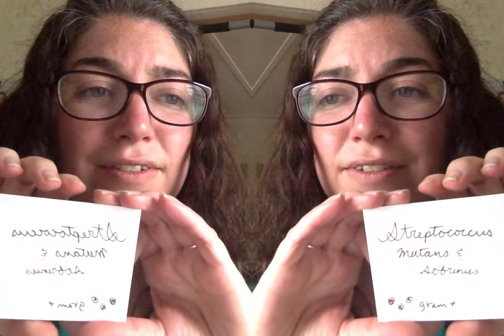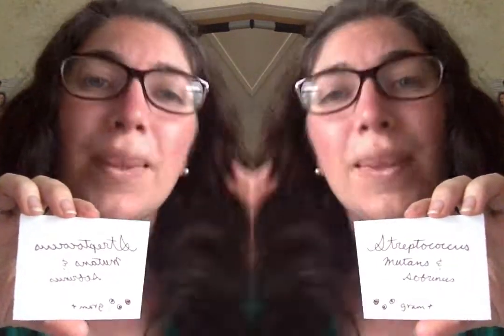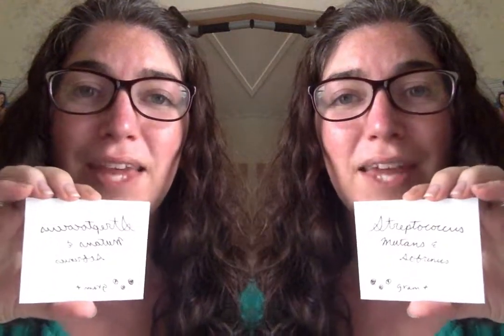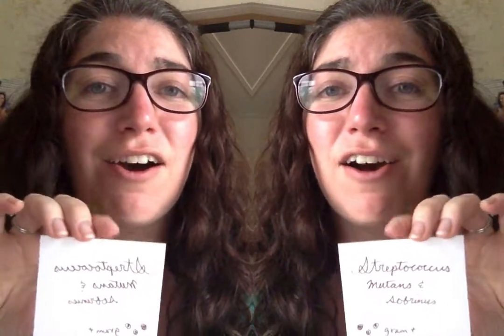Next we have Streptococcus mutans and Streptococcus sobrinus. These two species of streptococci are normal on your teeth — they grow on your teeth but also like to metabolize the sugar in the food that you eat, and they produce lactic acid which degrades the enamel of your teeth. Strep mutans and Strep sobrinus are two types of bacteria that can cause dental caries, also known as cavities. So make sure you brush your teeth.